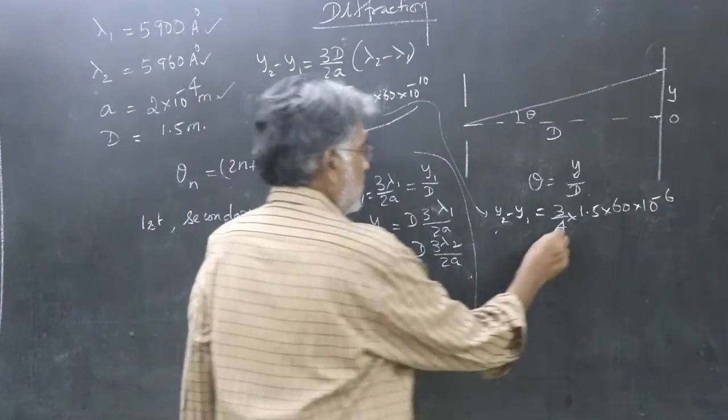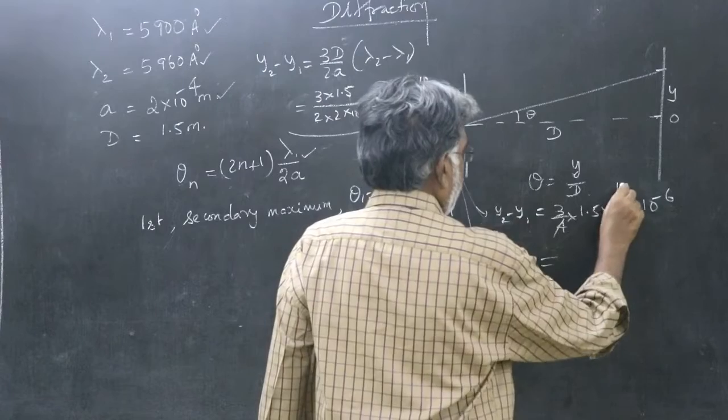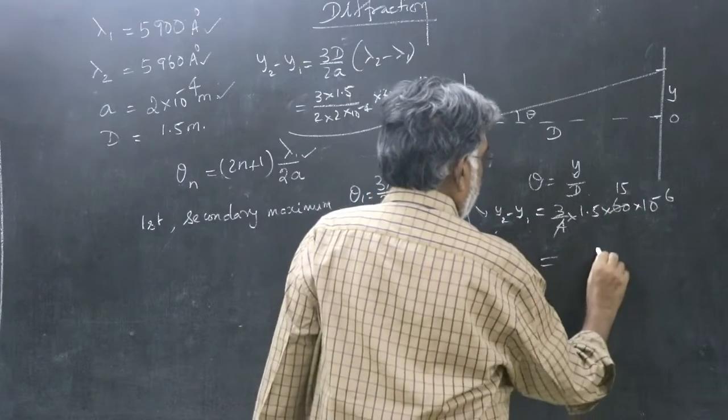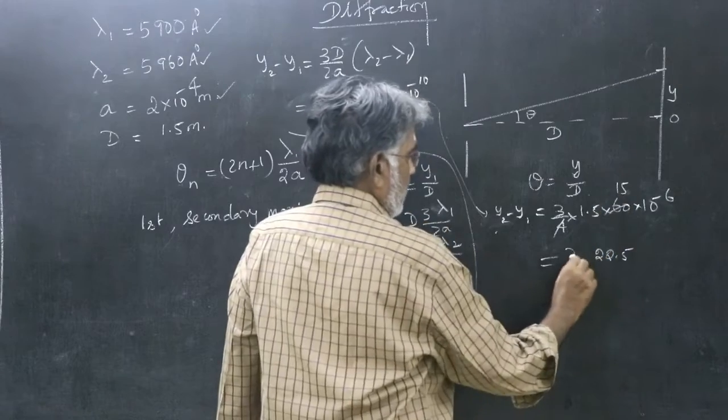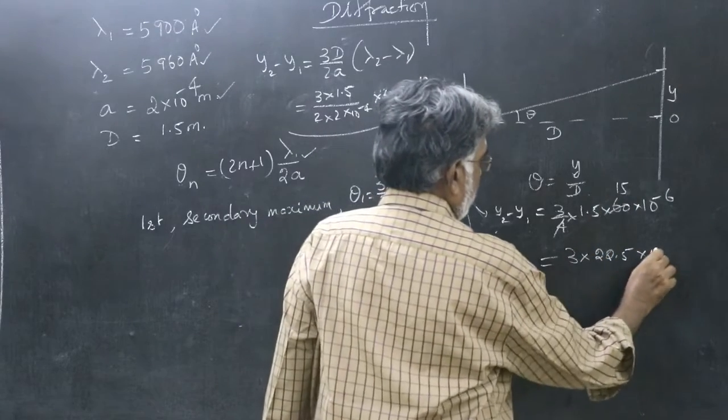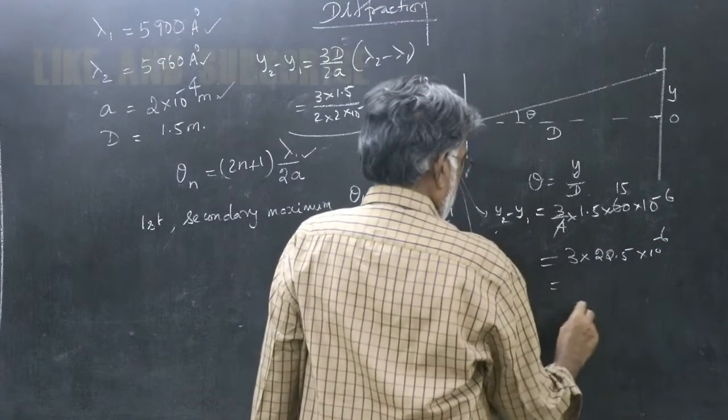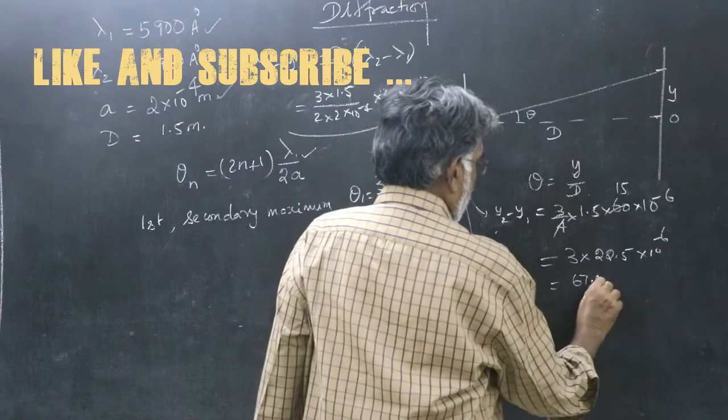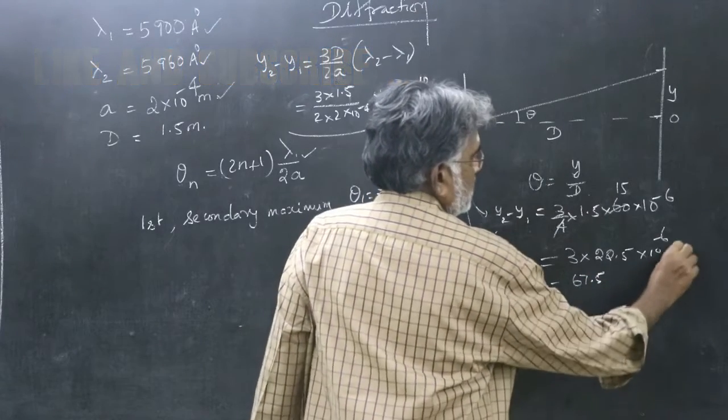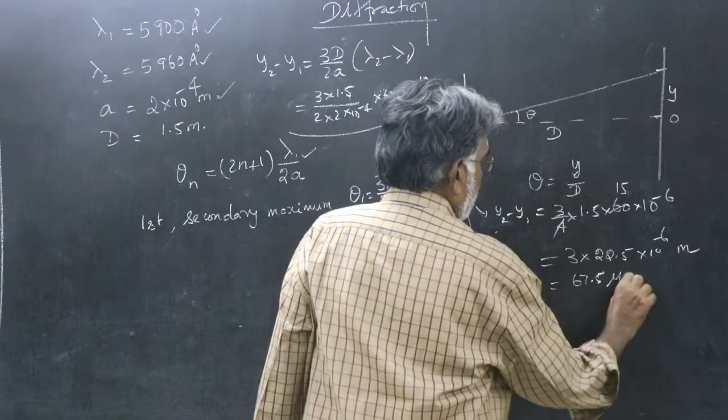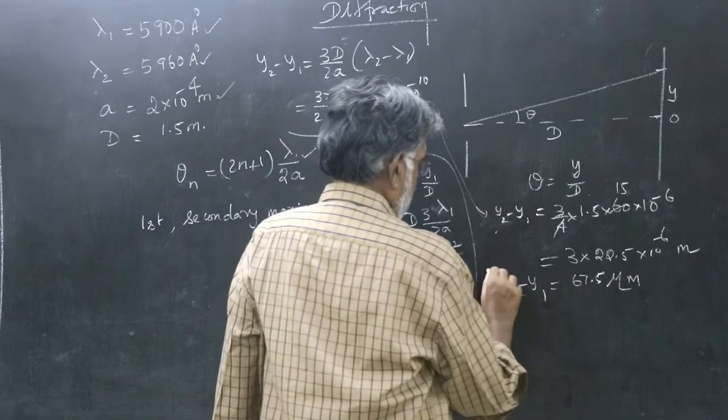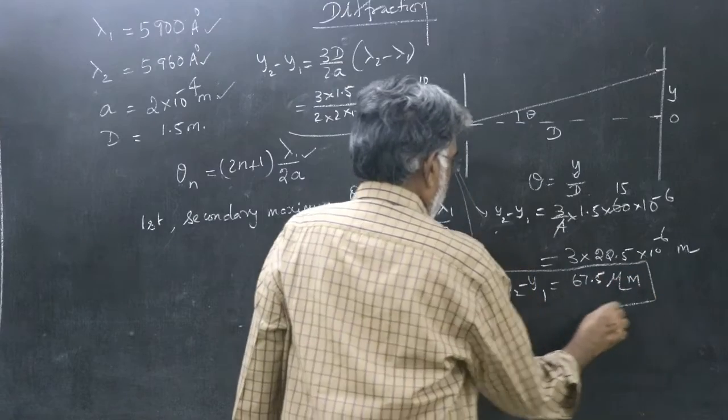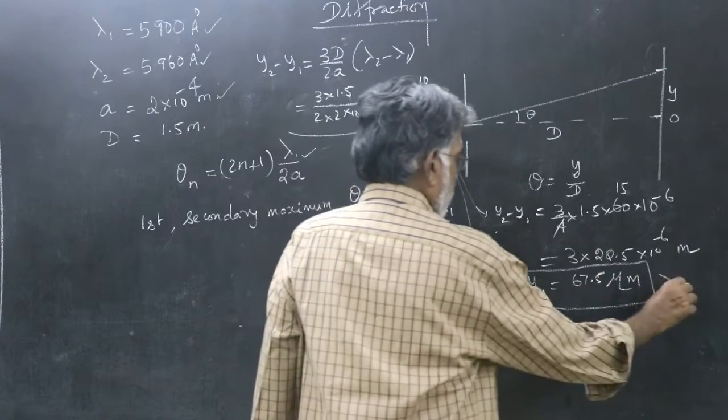Simplify. Luckily, this 4 and 60, 15. So, this will be 22.5, 1.5 into 15, there is another 3 here into 10 to the power of minus 6. So, this will be 67.5. This is in meter, so you write micrometer. So, y2 minus y1 is 67.5 micrometer.